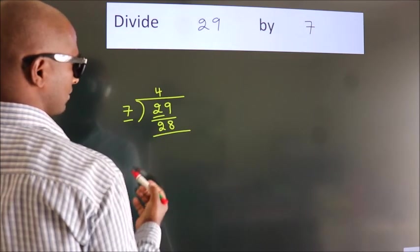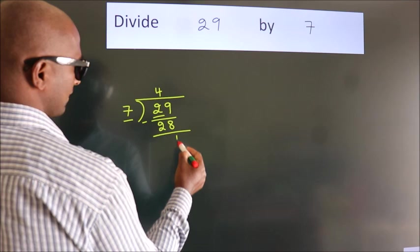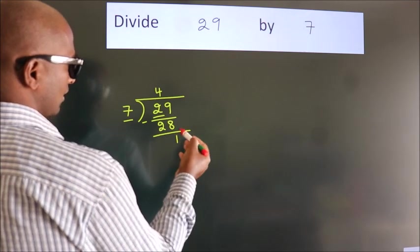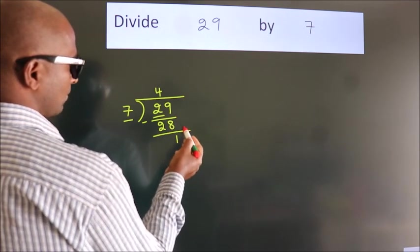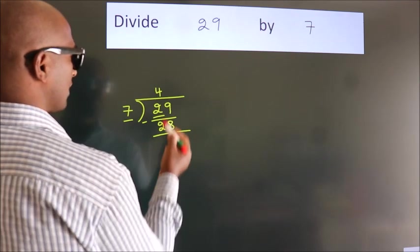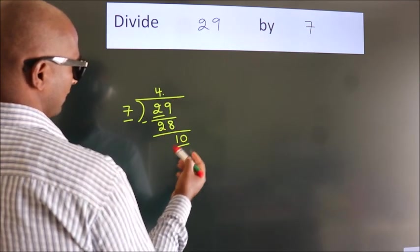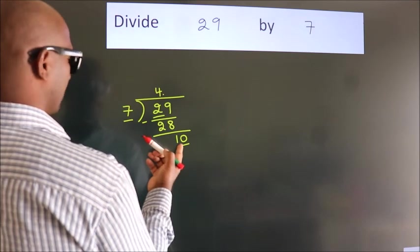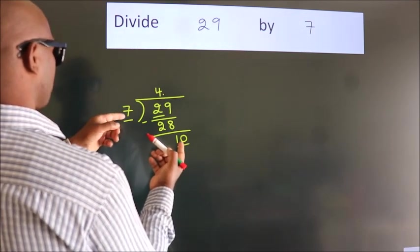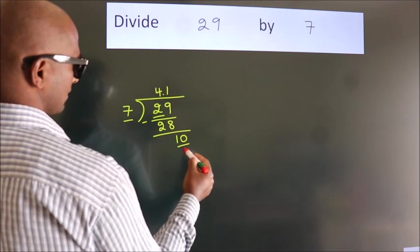Now we should subtract. We get 1. After this, no more numbers to bring down, so what we do is put a dot and take 0. So 10. A number close to 10 in the 7 table is 7 times 1 is 7.